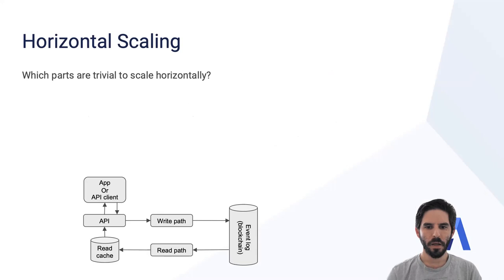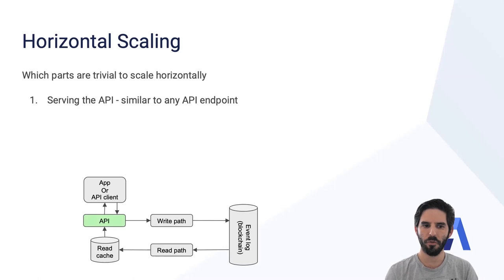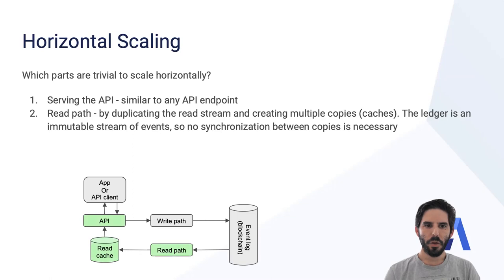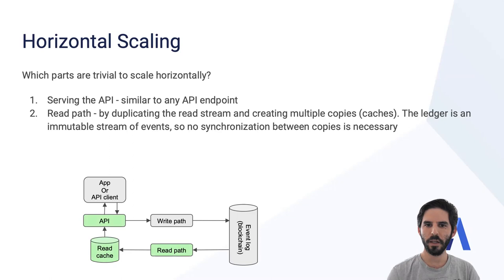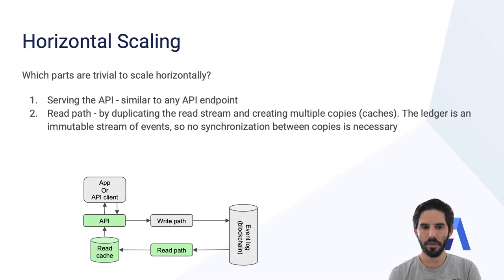Which parts of this data flow are trivial to scale horizontally? First, serving the API — similar to any other API endpoint in any system, we can have multiple copies or processes that interact with API clients and route messages to the different write paths or from the different read paths. The read path is horizontally scalable because the source of truth is the blockchain, the event log. By duplicating the full read path or duplicating components in this read stream, we can serve multiple different API clients — or even have multiple read paths that all go to the same API client — at very high throughput. No synchronization between the different read paths is necessary because they're all getting the same data from the same source of truth, the blockchain.